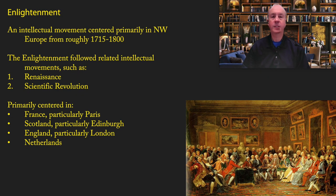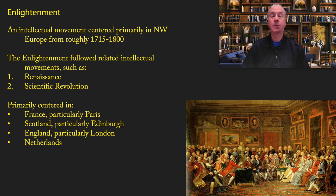Before examining whether the Enlightenment caused progress, let me overview what it was. The Enlightenment was an intellectual movement centered primarily in Northwest Europe, roughly between 1715 and 1800. Definitions vary — some include the Scientific Revolution or the Renaissance as earlier precursors, others extend into the 19th century. It was primarily centered in France, particularly Paris; in Scotland, particularly Edinburgh; and in England, particularly London. It was also important in the Netherlands and in what later became Germany.